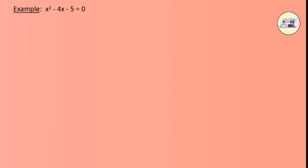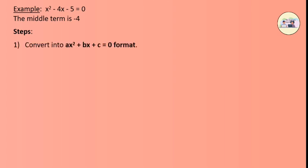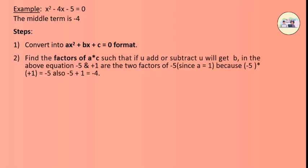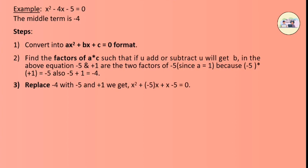Example: x squared minus 4x minus 5. Consider the above equation. The middle term is minus 4. Select two numbers such that their sum gives minus 4 and their product gives minus 5. First, convert the equation to ax squared plus bx plus c equals 0 format. Find the factors of a times c such that their sum or difference gives b. Here, minus 5 and plus 1 are the factors of minus 5, since minus 5 times plus 1 equals minus 5, and minus 5 plus 1 equals minus 4.